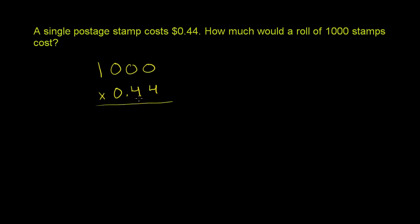Now, when you first multiply decimals, you can just pretend like they're whole numbers and then worry about the decimals later. So we could view this as 1,000 times 44, and then worry about the decimals.